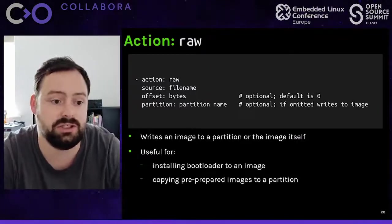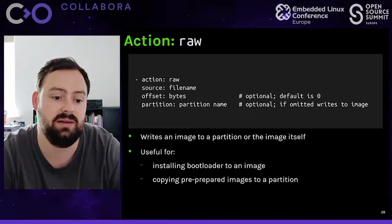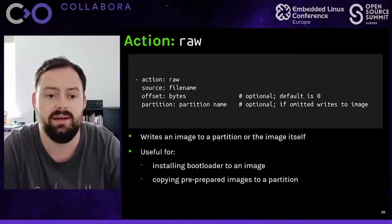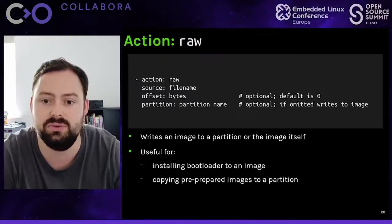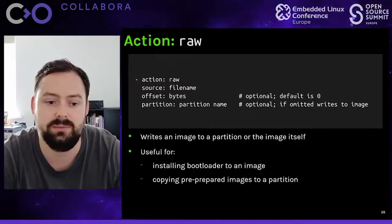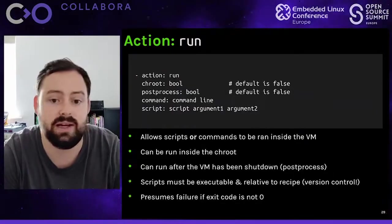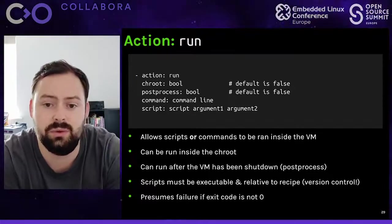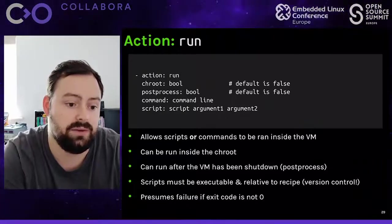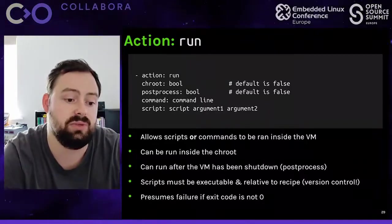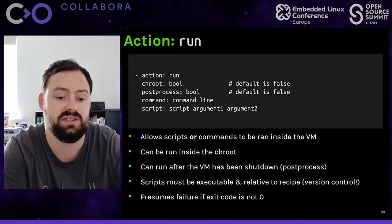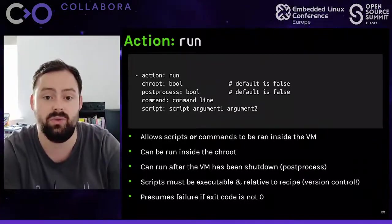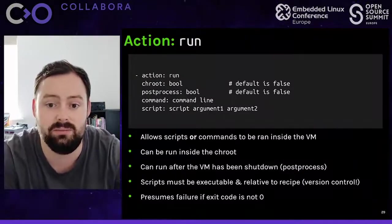The raw action writes an image to a partition or the image itself - used for installing bootloaders or copying pre-prepared images to a partition, essentially doing a DD under the hood. The run action allows scripts or commands to run inside the virtual machine, either on the FakeMachine itself, inside the target root filesystem, or after the VM has shut down. Scripts must be executable and are relative to the recipe, so everything can be stored together under version control. If a command fails, DevOS fails with the standard output and error of that command.